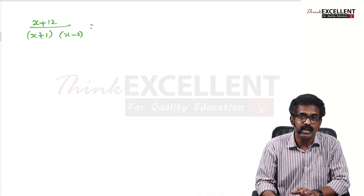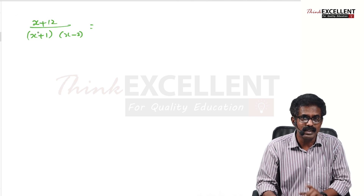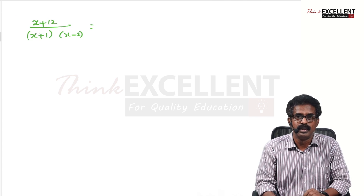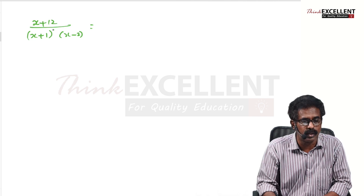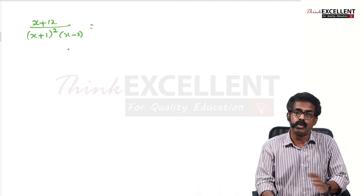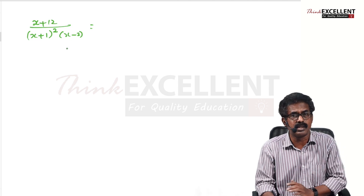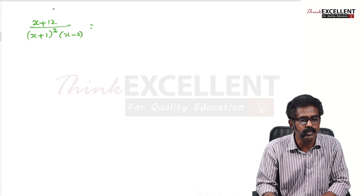Now in this video I am going to teach you the second type. In the second type, some factor will have a power. For example, the factor (x + 1) could be squared, or (x − 2) squared, or even cubed. That is the second type.